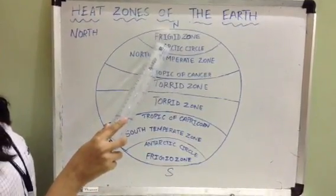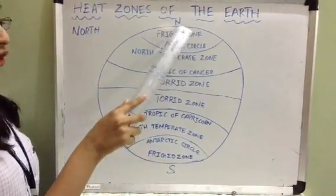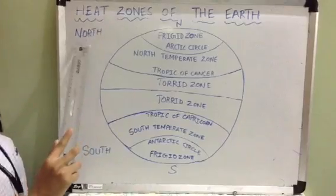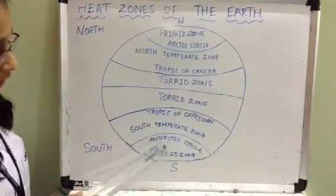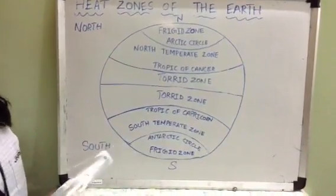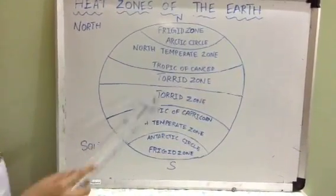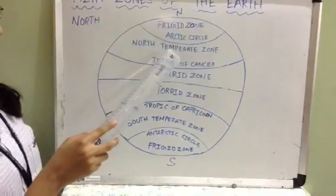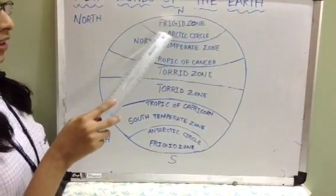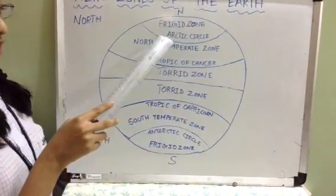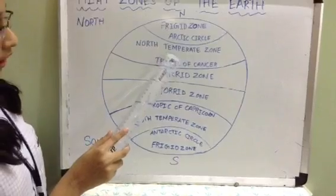Frigid zone: it lies between the arctic circle and the north pole in the northern hemisphere, and the antarctic circle and the south pole in the southern hemisphere. The sun's rays here are minimum and that is why the regions here are very cold.